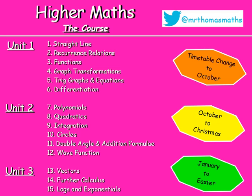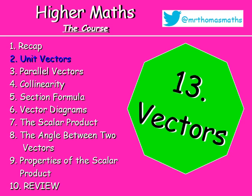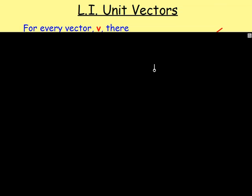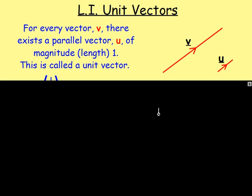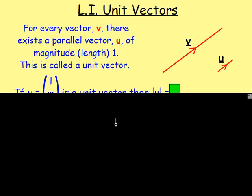Howdy! Here we are with chapter 13, lesson number two, looking at unit vectors. So to start this off, let's imagine we have a vector — we're going to call it vector V. This vector obviously has a length and it's got a direction. There is going to be another vector which is the same direction but with a magnitude or a length of one. And this is known as a unit vector.